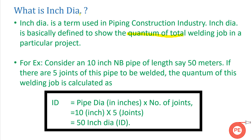How to calculate inch dia? Here I have considered an example. Suppose we have a 10 inch NB pipe and its length is 50 meters, and there are five joints in the pipe that need to be welded. The formula is: Inch Dia = Pipe Dia (in inches) × Number of Joints. So here, pipe dia is 10 inch and number of joints is 5, giving us 50 inch dia.